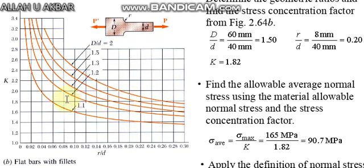Here at 0.20 and 1.50, we connect it. The stress concentration factor value is K equals 1.82. Now apply the formula: K equals sigma max by sigma average.